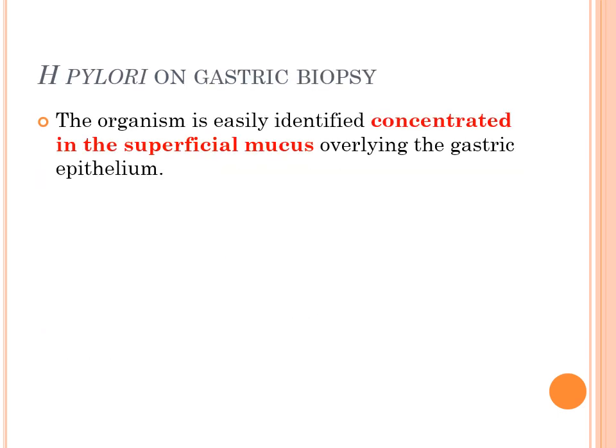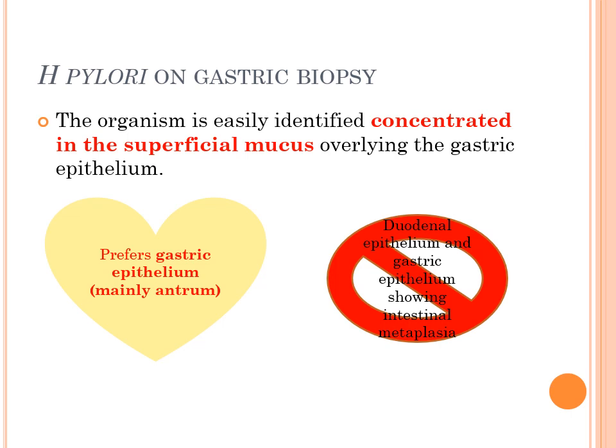On gastric biopsy under the microscope, the organism is easily identified concentrated in the superficial mucus overlying the gastric epithelium — so you look in the superficial mucus layer to find it. It always prefers the gastric epithelium, mainly the antrum. Importantly, it does not colonize the duodenal epithelium, and it does not colonize gastric epithelium showing evidence of intestinal metaplasia.